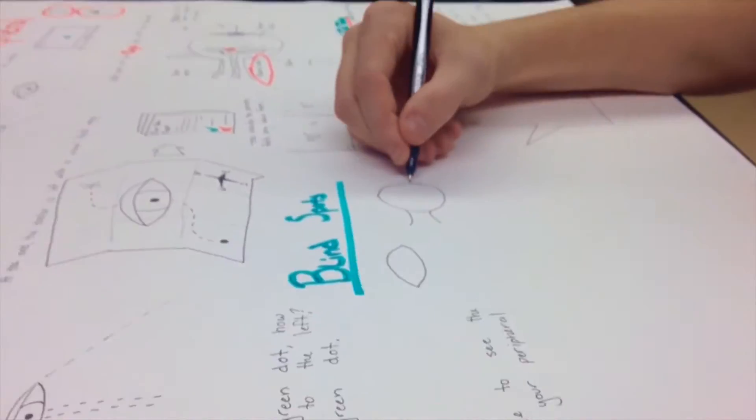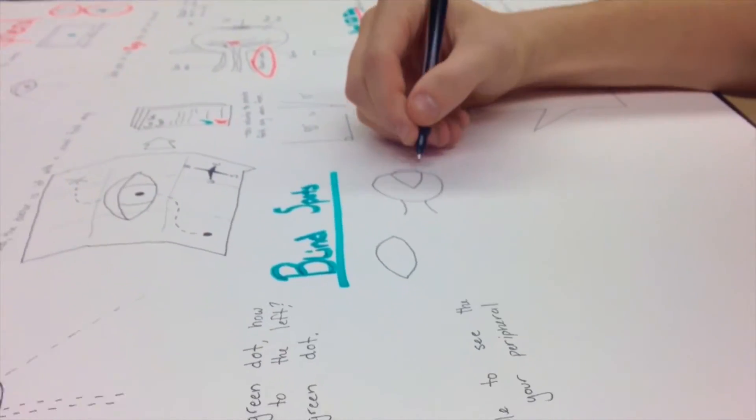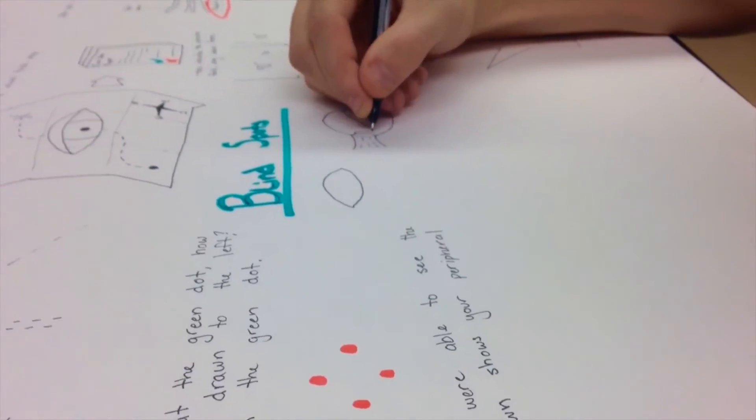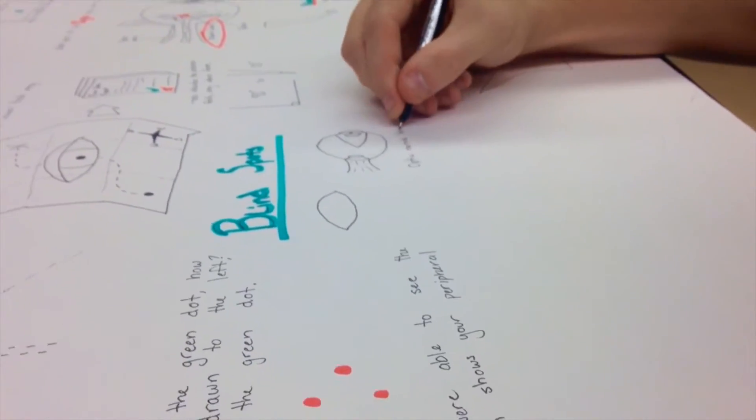Due to the blind spot, the brain recovers the lack of an image with what it thinks should be there. The blind spot on the left eye is located to the left of the center of vision, as the right is located to the right of the center.